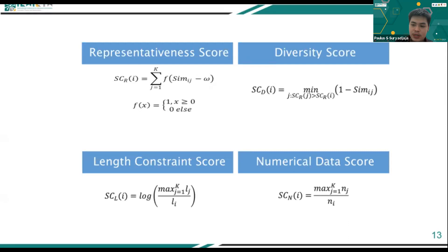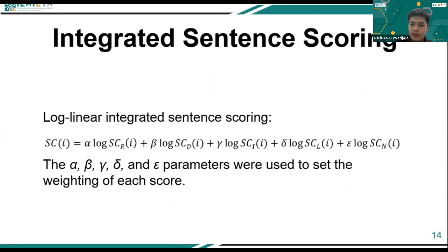The numerical data score reflects how much numeric data is contained in a sentence. Generally, sentences containing numeric data hold important information, so they are considered good candidates for inclusion in the summary. To produce a summary with more information, higher relevance, higher diversity, a certain length threshold, and important numerical information, an integrated sentence scoring method is used that combines the five scores into one final score for each sentence.